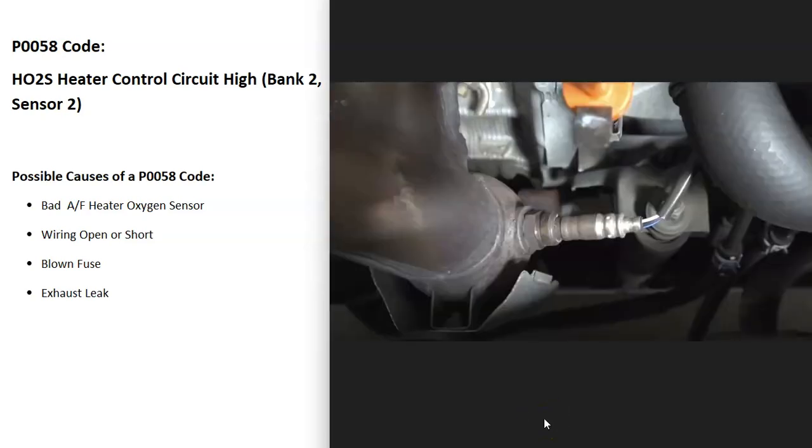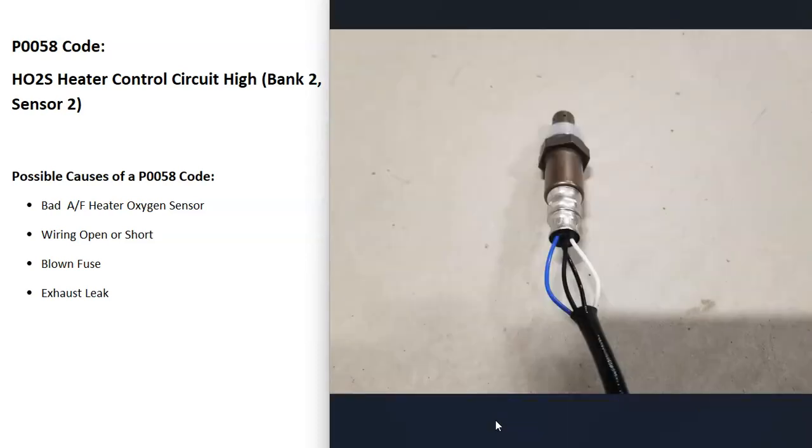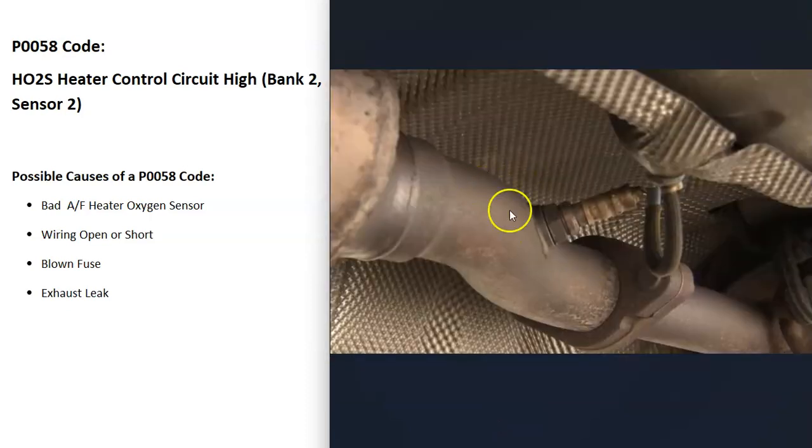What are some possible causes of a P0058 code? First, that oxygen sensor might be bad—the Bank 2 Sensor 2 oxygen sensor might have just failed. You can test it if you want; there are different tests you can do to see if it's working. I made some videos on how to test these—I'll put a link below. But the first thing to do is locate that Bank 2 Sensor 2 oxygen sensor and either test it or replace it.